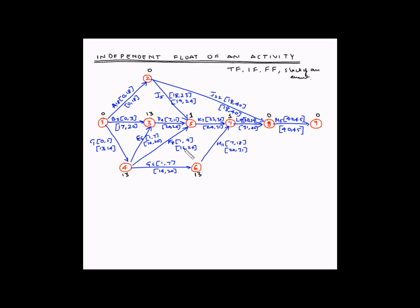The total float available for activity F is 16 minus 1, which is 15 days. Out of these 15 days, one day — which is the head slack — is the interfering float, and 15 minus 1 is the free float available for activity F. If we use the interfering float for activity F, the float of activity K is impacted. However, if we use the free float for activity F, there is no impact on the float of activity K.